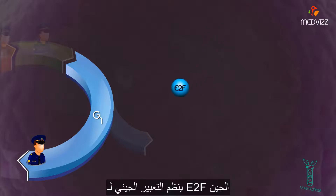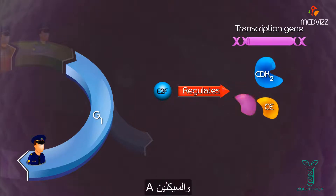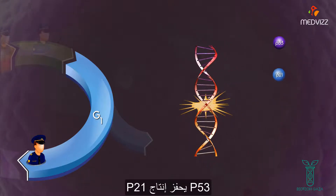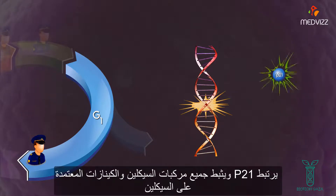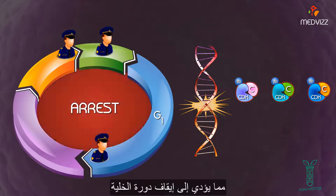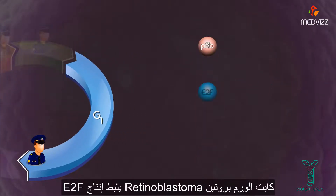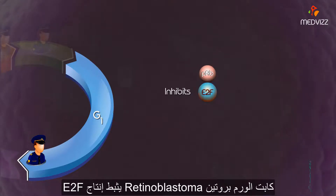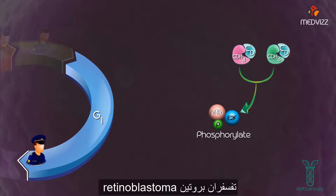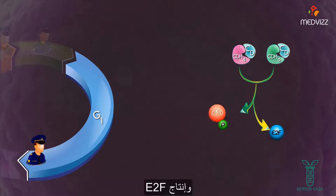The gene E2F regulates expression of transcription genes and cyclin-dependent kinase 2, cyclin E, and cyclin A. If there is significant DNA damage, P53 stimulates production of P21. P21 binds and inhibits all cyclin-CDK complexes, which leads to arrest of the cell cycle until the DNA damage is repaired and P21 levels drop. The tumor suppressor retinoblastoma protein inhibits E2F expression. Cyclin-D CDK4 and cyclin-D CDK6 complexes phosphorylate retinoblastoma protein, leading to its inactivation and expression of E2F.